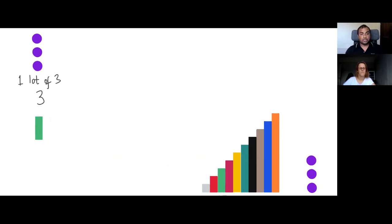So using the dots, can you show me what two lots of three looks like? Sure. And how many dots do you see in total now? In total I see six dots. Can you show me what that looks like with the rods? Yes.